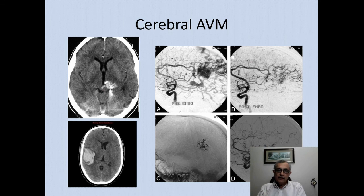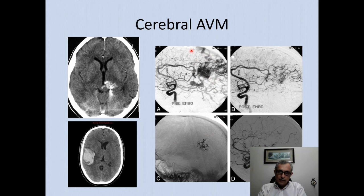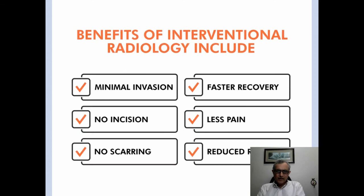Interventional radiology is also significantly involved in cerebral AVMs. Here is a patient with a bleed in the brain and tortuous vessels — a micro-catheter was placed through the internal carotid artery and glue was injected. The pre and post images show the glue blocking off the nidus of the arteriovenous malformation.